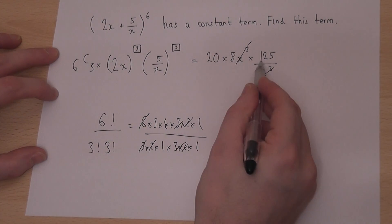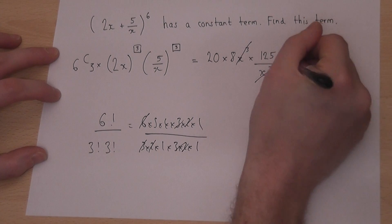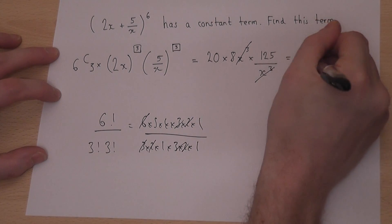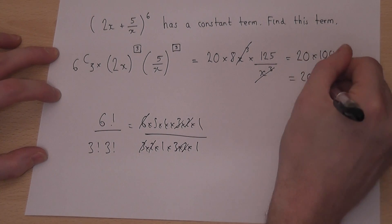So 8 times 125 is 1,000. So this just equals 20 times 1,000, which is just 20,000.